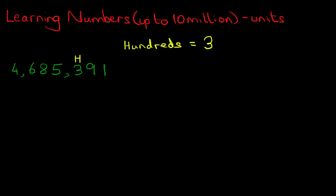Suppose the next question says: how many ten thousands are there in this number? Which column represents ten thousands? The thousands are here, and the ten thousands are this one here. There are eight ten thousands.